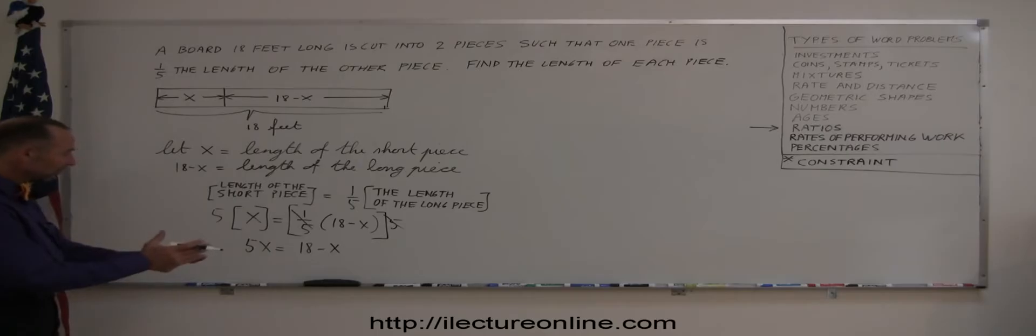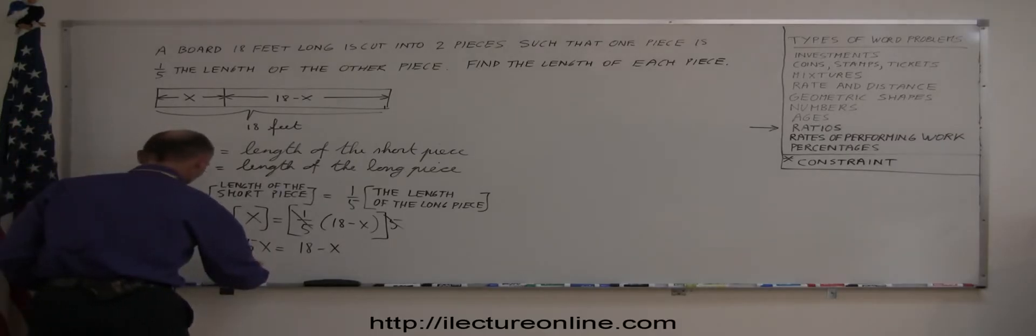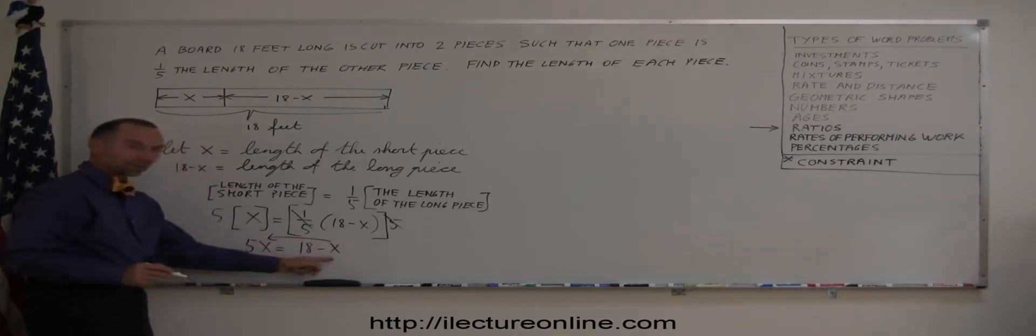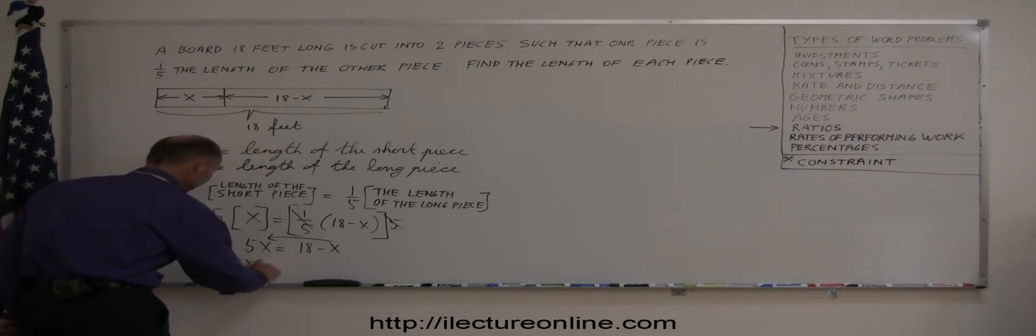The next thing I do is move all the terms with x to one side, keep all the numbers on the other side, so we get 5x. And remember, when you cross over the equal sign, the sign changes, and this becomes 5x plus x equals 18.